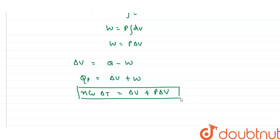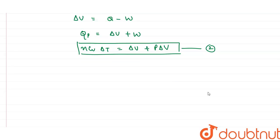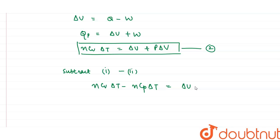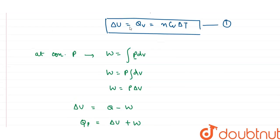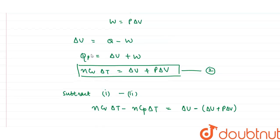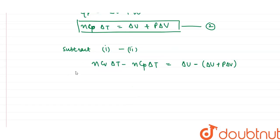We now have two equations: equation one at constant volume and equation two at constant pressure. I am going to subtract equation one from equation two. After subtraction: nCpΔT − nCvΔT = (ΔU + p·ΔV) − ΔU.